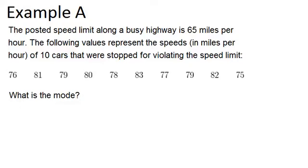In example A, the posted speed limit along a busy highway is 65 miles per hour. The following values represent the speeds in miles per hour of 10 cars that were stopped for violating the speed limit. What is the mode?